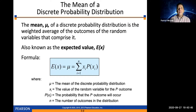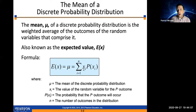The mean, called mu, of a discrete probability distribution is the weighted average of the outcomes of the random variables that comprise it. The mean of a random variable is also known as its expected value, written E(x). The formula: you take each value of the random variable, multiply it by its corresponding probability, and then add all those products together.